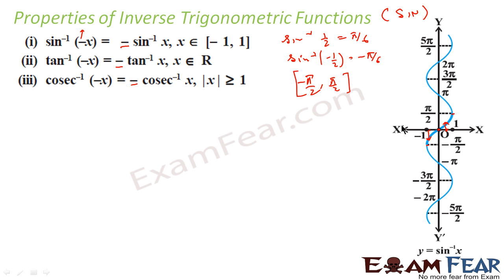You can see this logically using the graph since the center is (0, 0). For example, sin⁻¹(−1/2) = −sin⁻¹(1/2) = −π/6. Now let's also prove this mathematically. Let the LHS be sin⁻¹(−x) = y, so −x = sin(y).